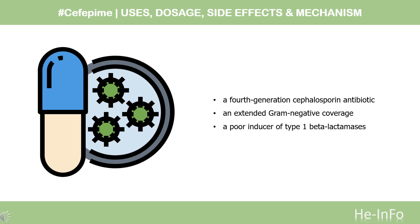Compared to third-generation cephalosporins, Cefepime has an extended gram-negative coverage. Whereas other cephalosporins are degraded by plasmid and chromosome-mediated beta-lactamases, Cefepime is stable and not significantly hydrolyzed by these enzymes. Cefepime is also a poor inducer of type 1 beta-lactamases and, therefore, a good alternative against bacteria resistant to third-generation cephalosporins.